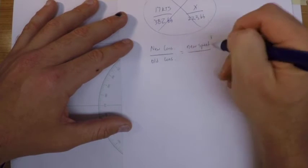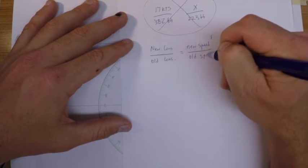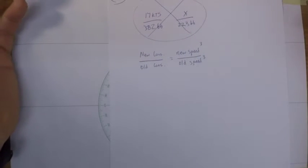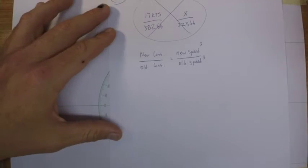It's a cube relationship. Anybody who's driven a boat knows this - the faster you go the faster you burn fuel, the faster the rate that you burn the fuel. So there's always a sweet spot on the ship.